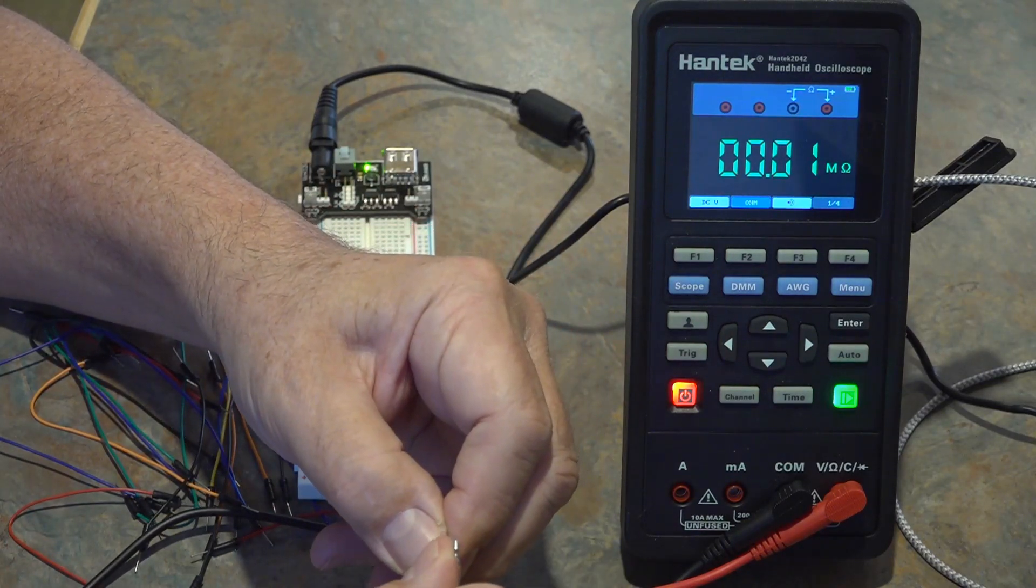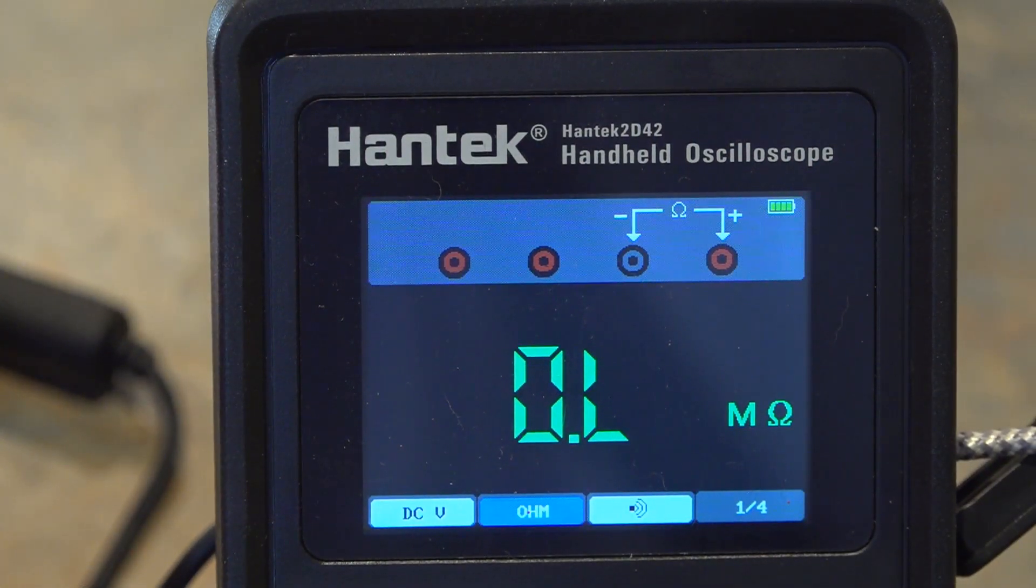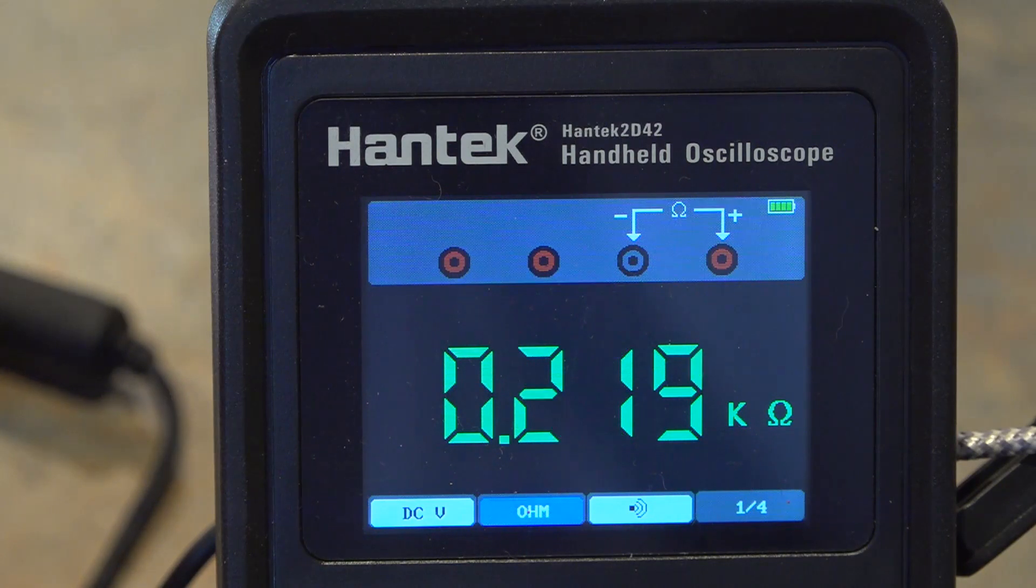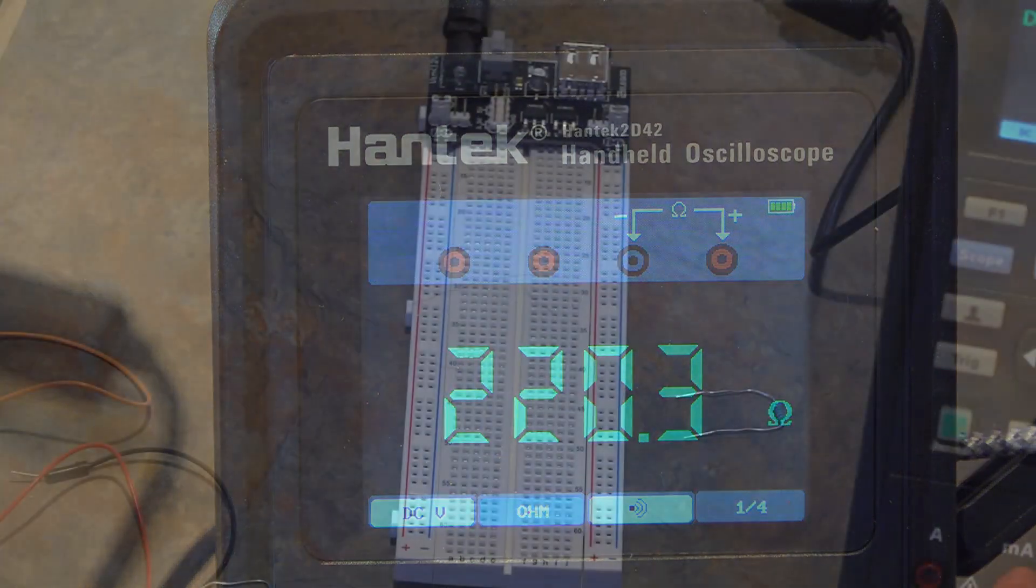And then the third and final resistor that I'll be using. My circuit is very simple and this will be, there we go. Alright this is 220 ohms, so 220.3, let's call it 0.3. Alright so now I have my three resistors.